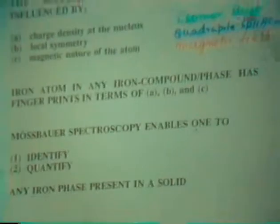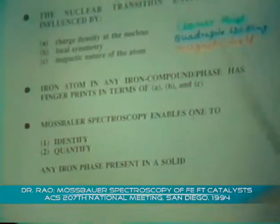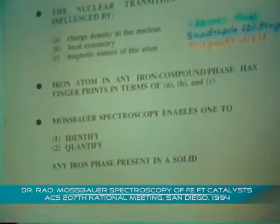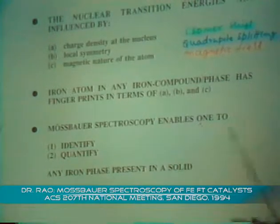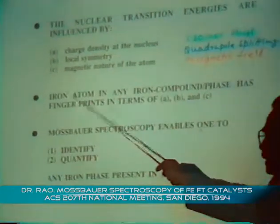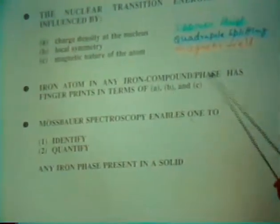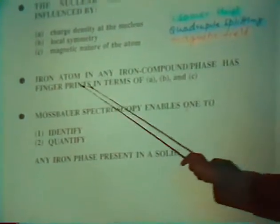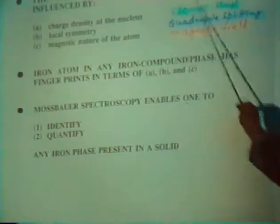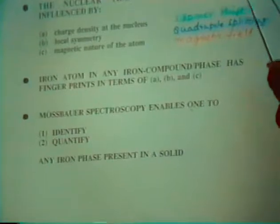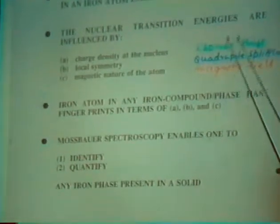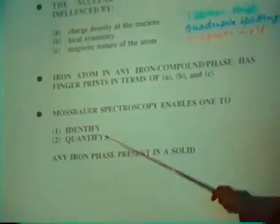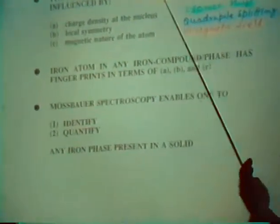They are isomer shift, quadrupole splitting, and magnetic field acting at the center of the nucleus. In any given iron-containing phase, this has a fingerprint in terms of these three parameters. Once you do Mössbauer spectroscopy measurements, we will be able to identify the phases that are present, and we can also quantify the particular phase that is present.